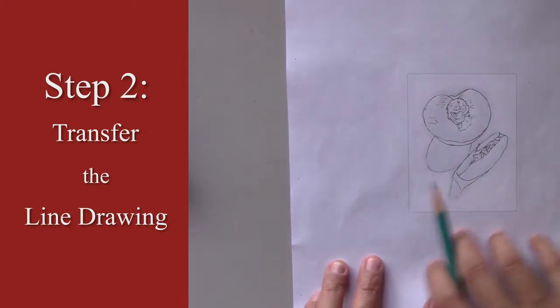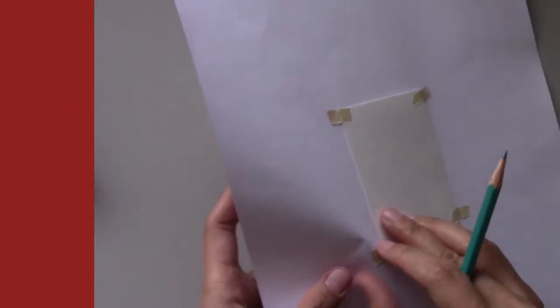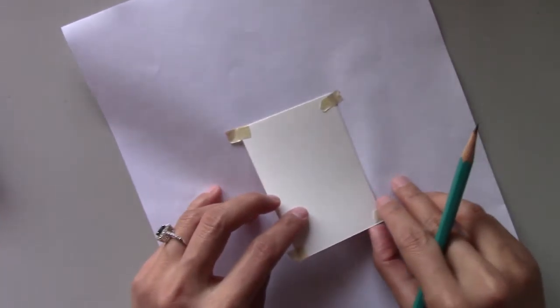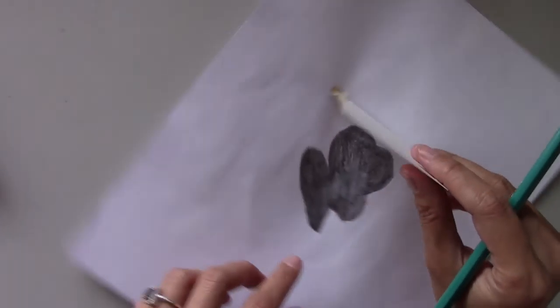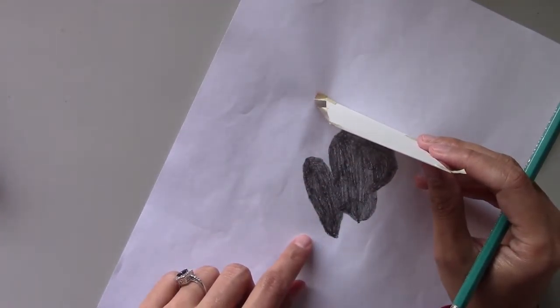This is the line drawing for the white peach. First, turn the paper over and shade the line drawing with an 8B pencil. By doing this, you create a copy of the peach.